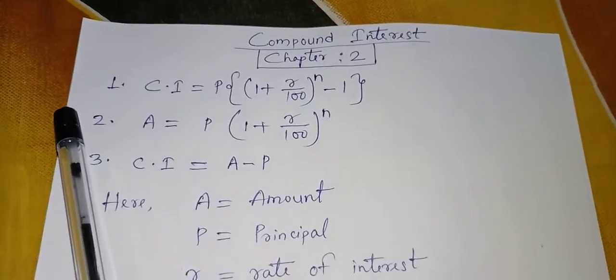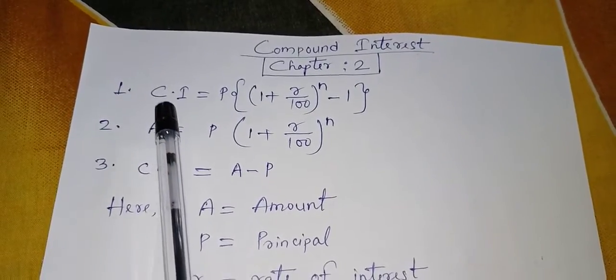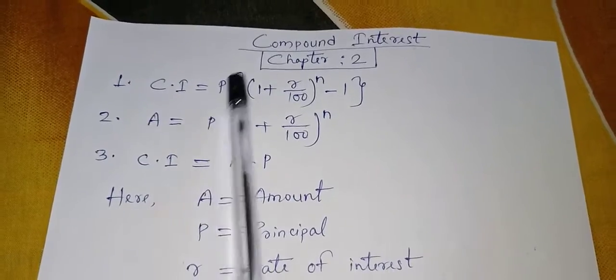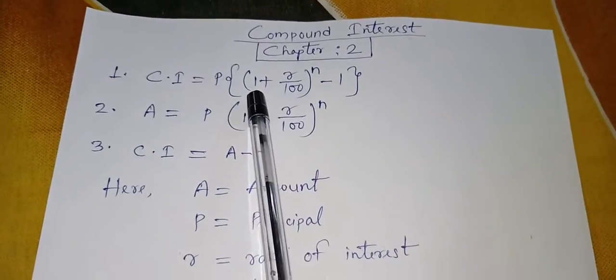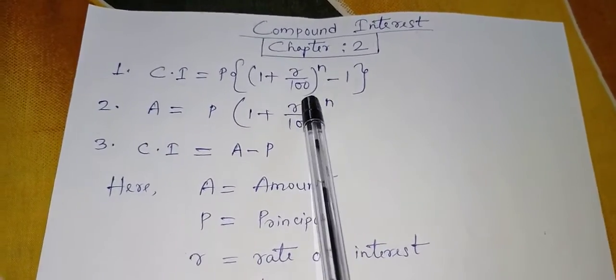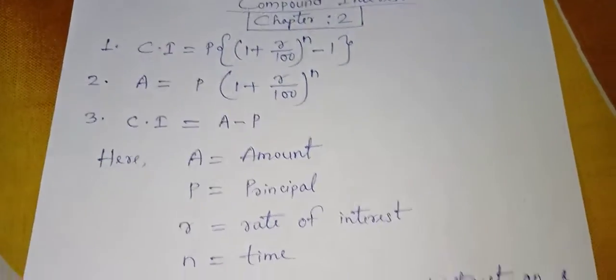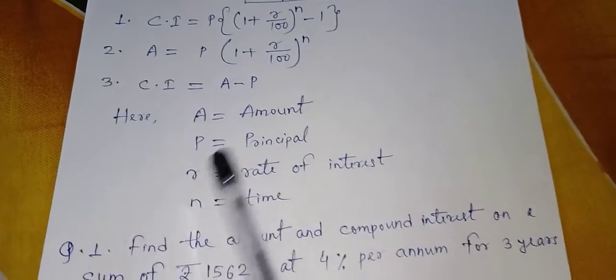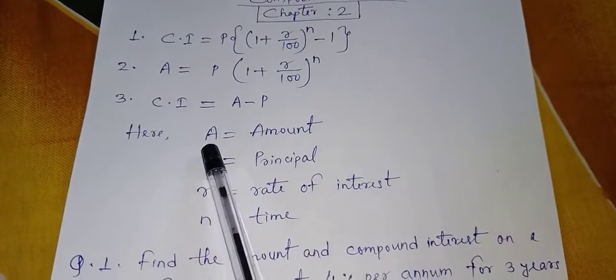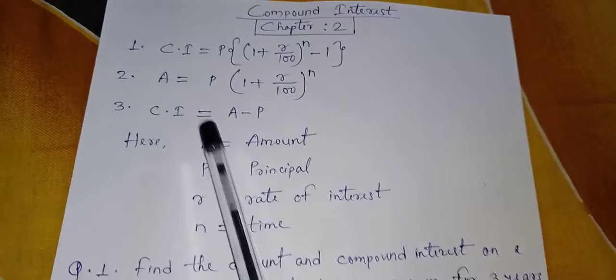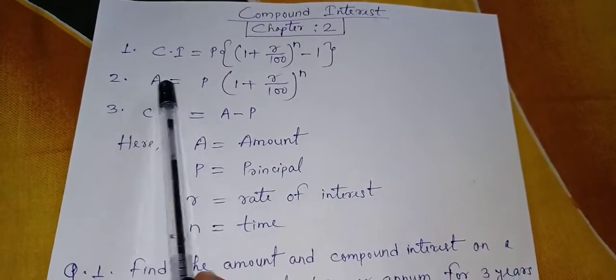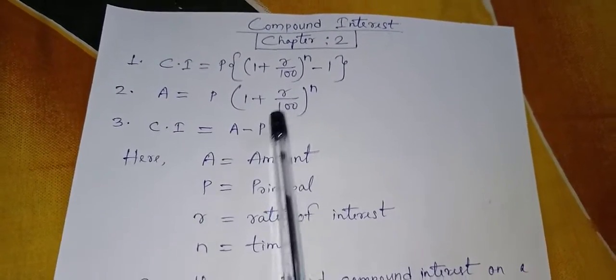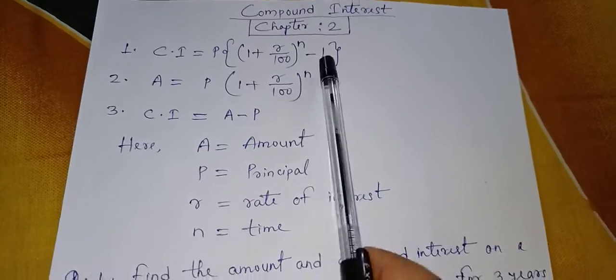So I have some formulas for the chapter. Compound interest, CI equals P times bracket 1 plus r by 100 to the power n minus 1. Here in the second formula, you have A equals P bracket 1 plus r by 100 to the power n.